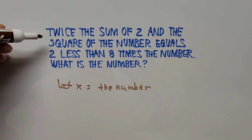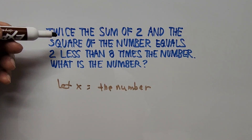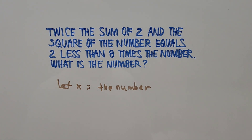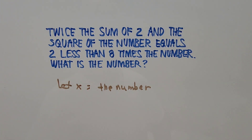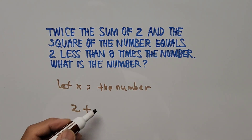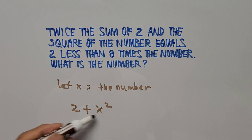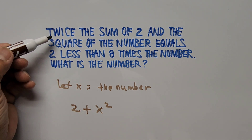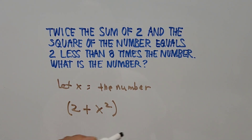Let's go back to the problem. 'Twice the sum of 2 and the square of the number' — let's pause here. How do we write that as a mathematical expression? The sum of 2 and the square of the number is 2 plus X squared. Since it says 'twice' that sum, we put parentheses around it and multiply by 2.